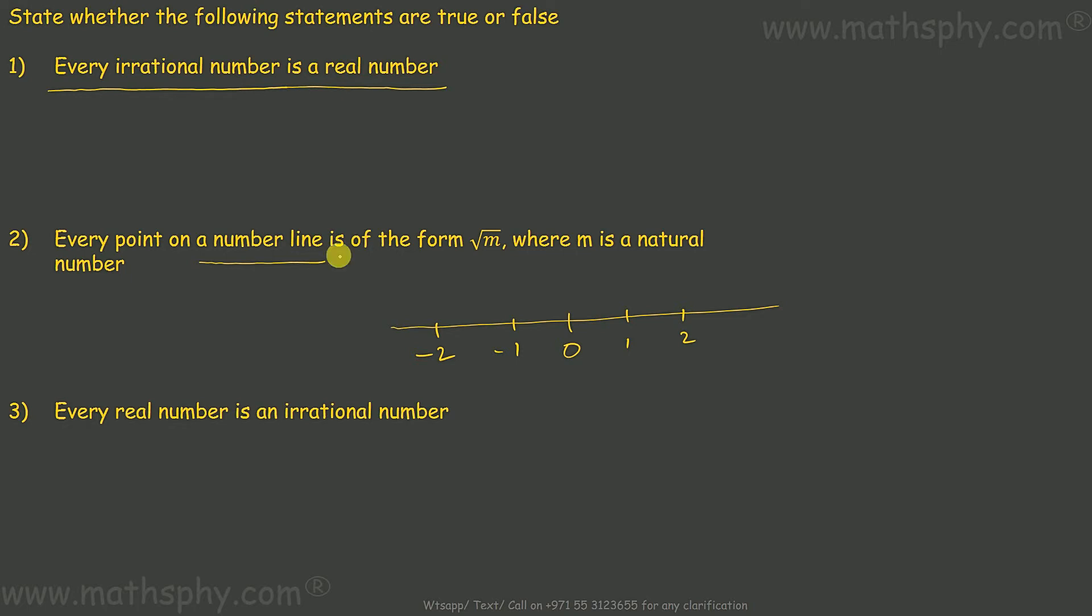Every point on number line is of the form root M. Let's take 2. 2 can be written as root 4. Here M I am taking as 4. So this works here.